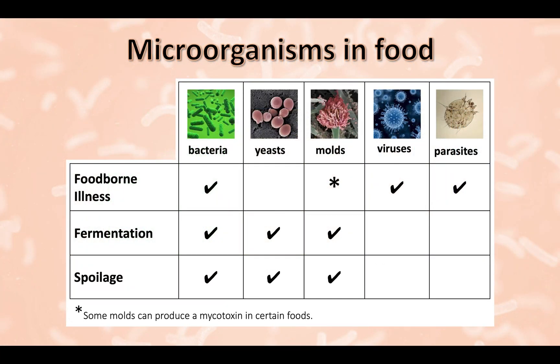This slide lists the types of microorganisms important to foods. They are categorized as either contributors of food spoilage, foodborne illness, or food enhancement. Bacteria are the most important group of microorganisms to consider because they contribute significantly to food safety, food spoilage, and fermentation. Therefore, they are often a frequent target for microbial testing.